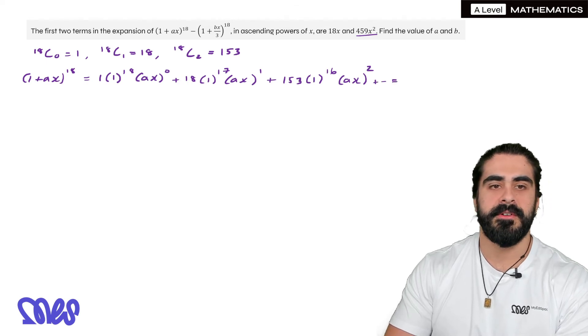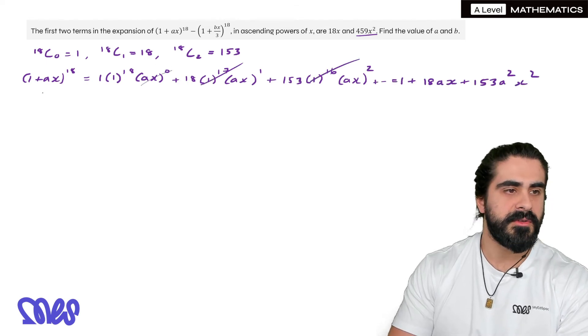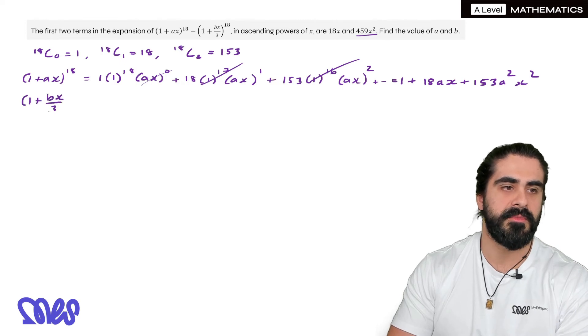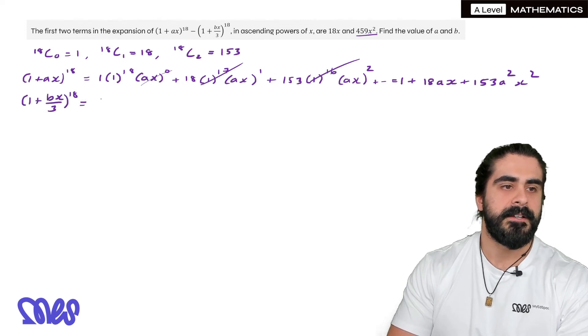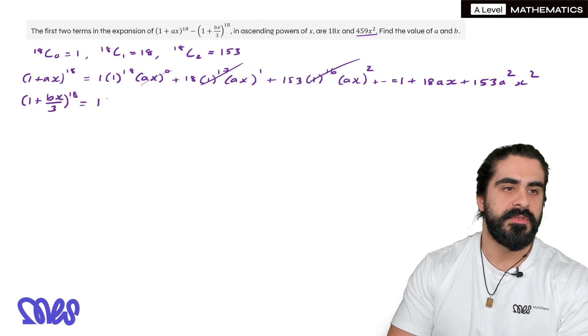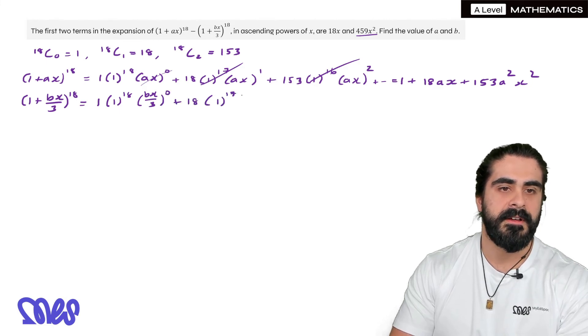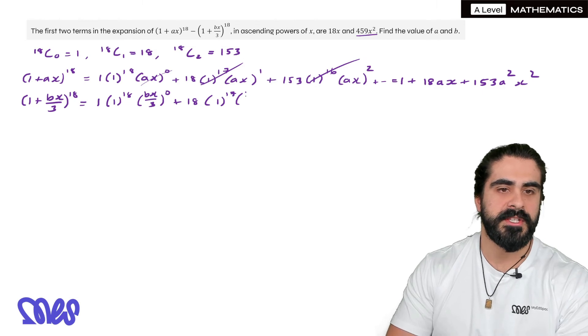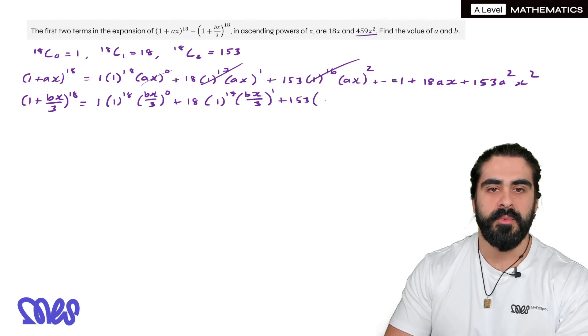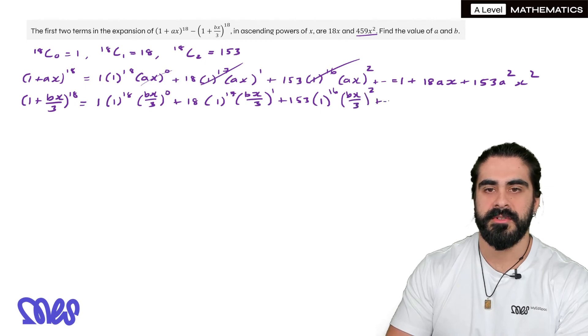So doing the same with (1 + bx/3). We have to be a bit more careful with this one. So it's 1 times 1^18 times (bx/3)^0, 18 times 1^17. So the only thing that's changing is what we're subbing in for x. This will be power of 1. Then we have 153 times 1^16 times (bx/3)^2.